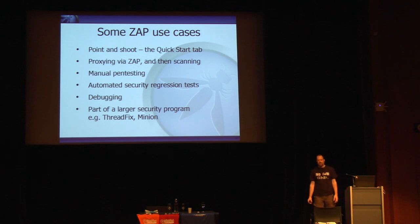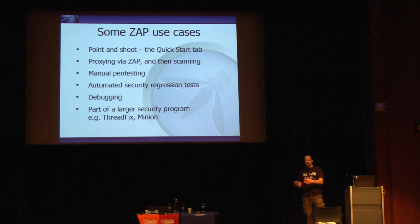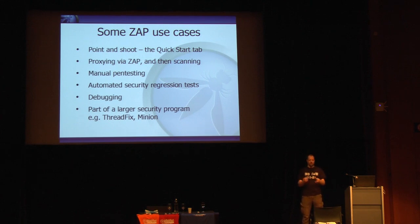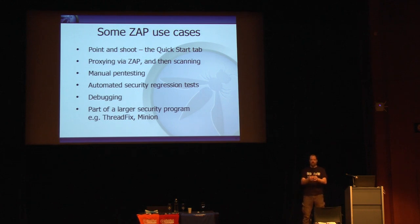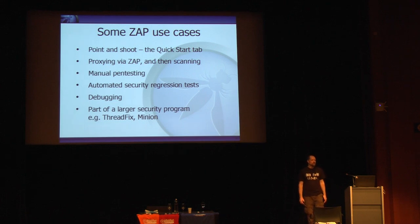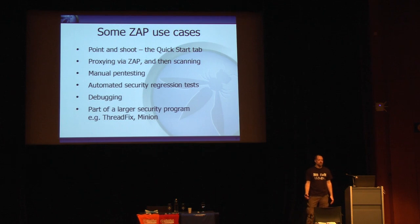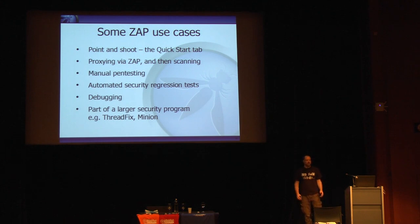You can also use ZAP as a debugger. When you're developing a website and having problems with JavaScript libraries or web sockets, you can use ZAP to see what's going on and change things mid-flight rather than changing code, recompiling, and redeploying. Also, tools like ThreadFix and Minion have a wider scope than scanning individual web applications and make very heavy use of ZAP — this is a very important use case for us.